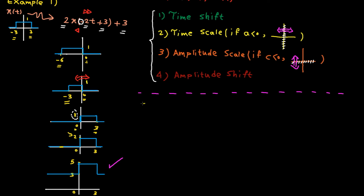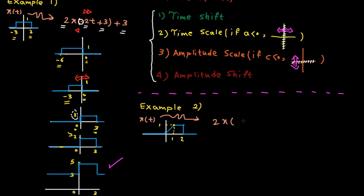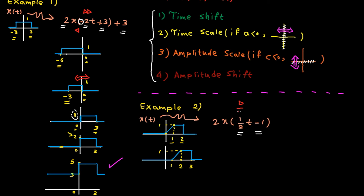Let's go for the second example. x(t) is given and the question is what is 2·x(½t−1). Step number one: apply time shifting. The shift value here is negative, so we shift the signal by one unit to the right. One on the time axis goes to two, two goes to three, and zero goes to one. The amplitude stays the same. Here is the shifted signal.